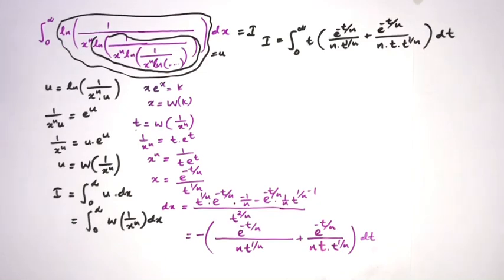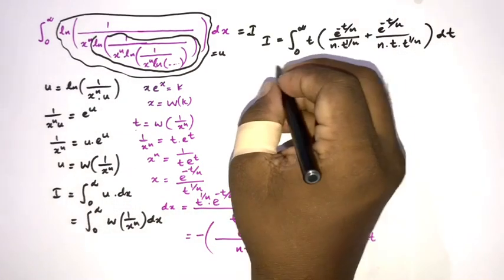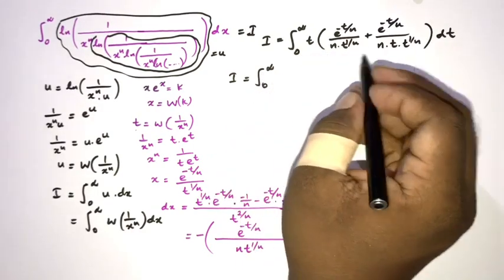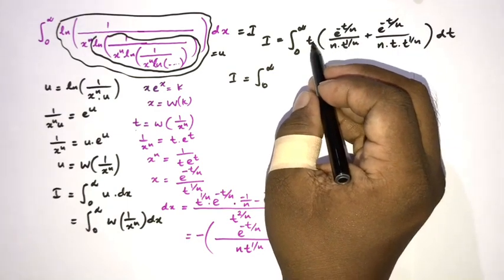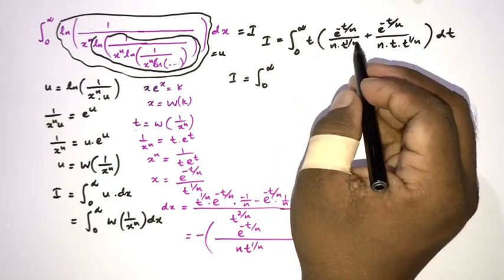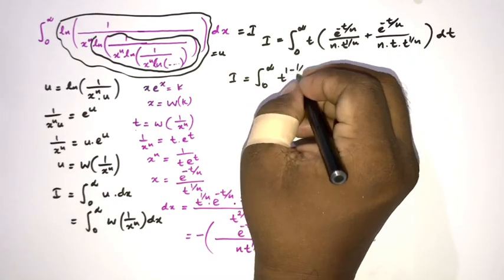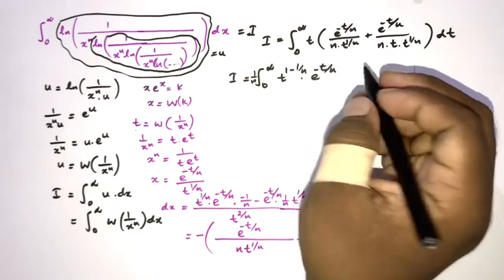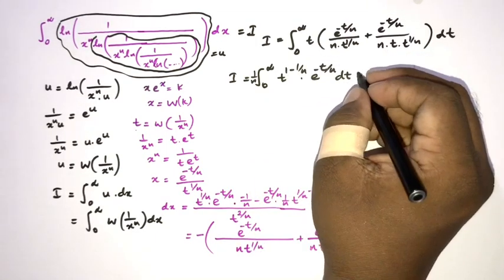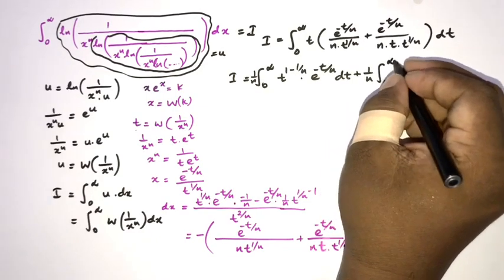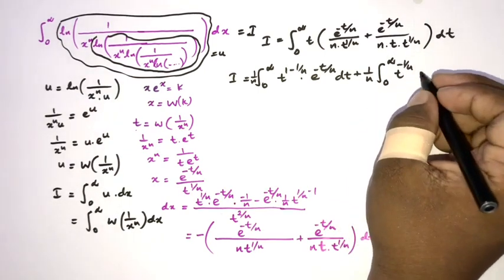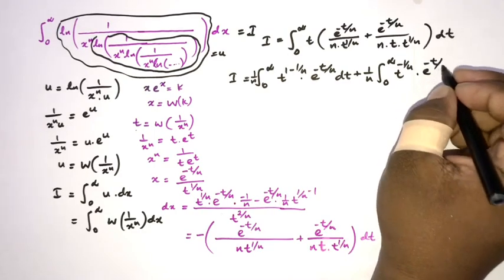We split this into two integrals. So i equals 1 over n times the integral from 0 to infinity of t to the 1 minus 1 over n times e to the minus t over n dt, plus 1 over n times the integral from 0 to infinity of t to the minus 1 over n times e to the minus t over n dt.